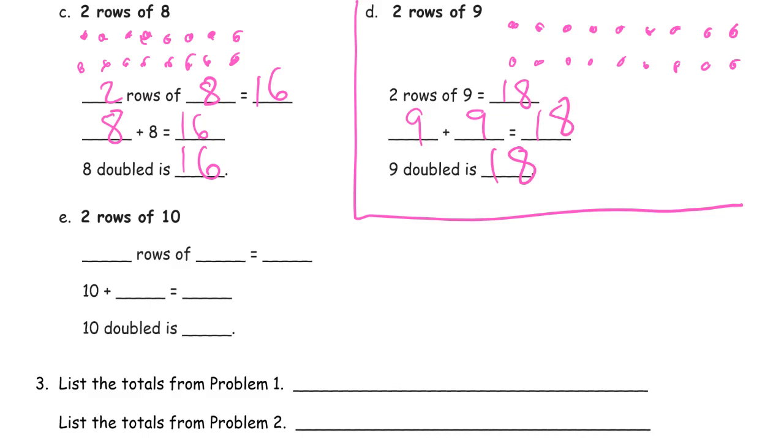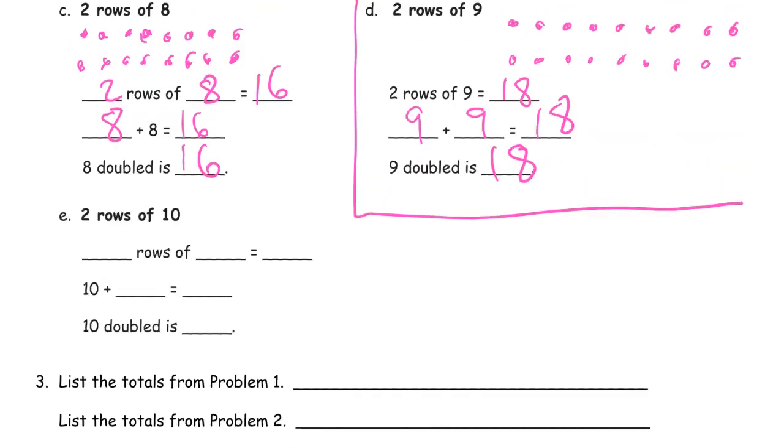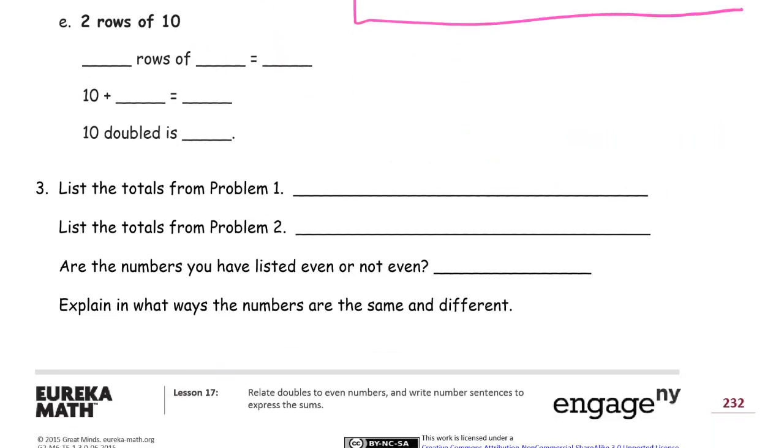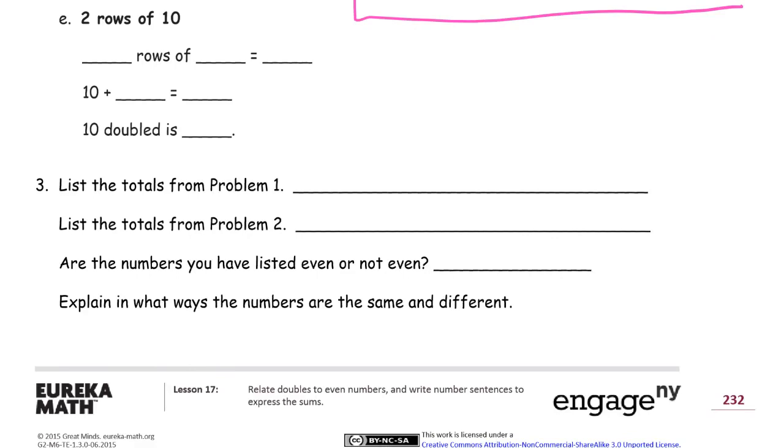Now, if I'm going too fast with drawing them and writing in the number sentences, just pause the video. Pause the video and do a couple of them ahead of me. And, then, watch the video to see if you did them right. Or, just pause the video and catch up and then keep watching. No one will know.